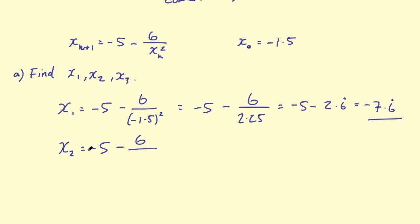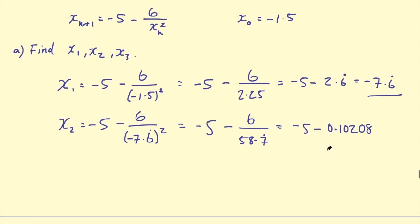We sub that back into this formula again. We've got -7.6 recurring squared. Use our calculators to do some calculator magic. We get 6 over 58.7 recurring, then 6 divided by 58.7 recurring. That gives -5 - 0.10208 approximately - I rounded that off. Then that's -5.10208. That's x_2, the second term in our iteration.